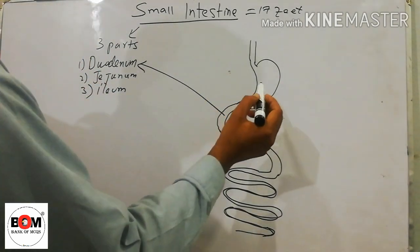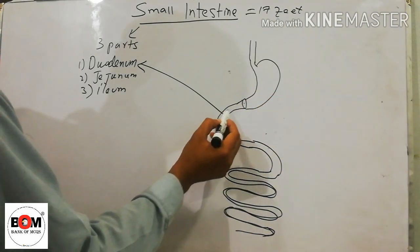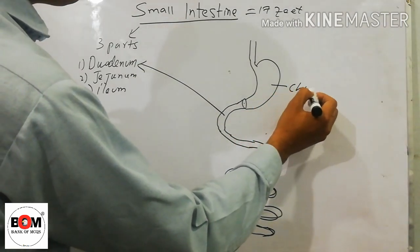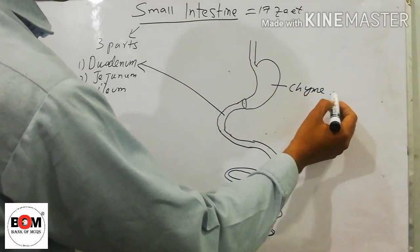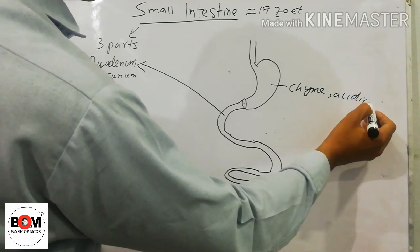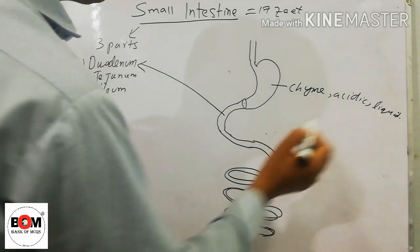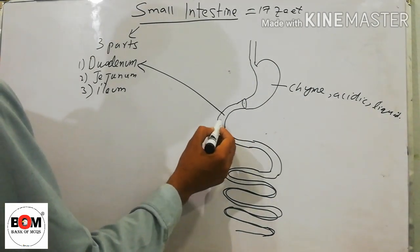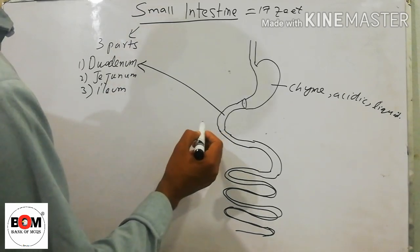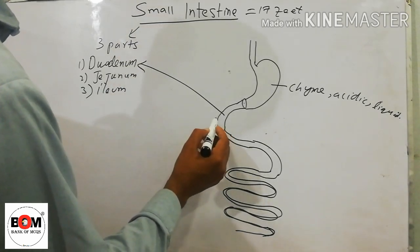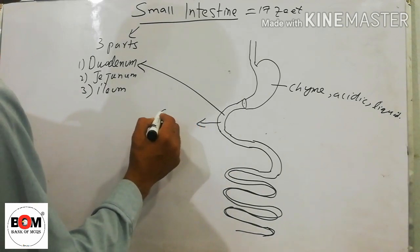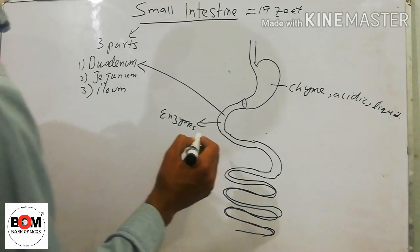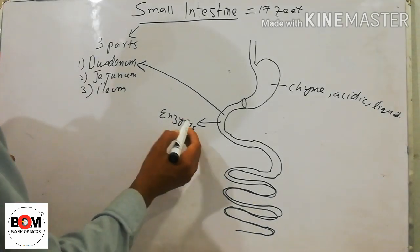The food from the stomach enters the duodenum. The food in the stomach is called chyme, and it is acidic and in liquid form. When it enters the duodenum, further digestion occurs there.